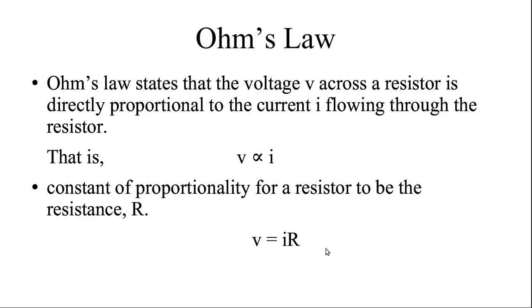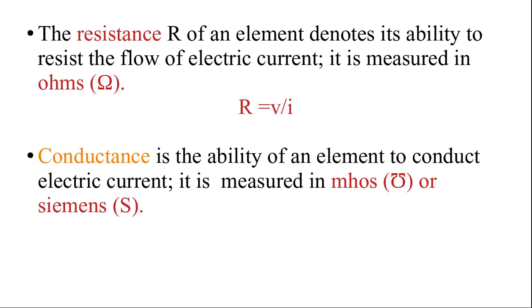So Ohm's Law is V = IR. Capital R is an element denoting the ability to resist the flow of current, and it is measured in ohms. The unit of resistance is ohm. If you want to find R when you have voltage and current, then R equals V divided by I. If you have the length and cross-sectional area of the element, you use the formula R equals rho times l divided by A.